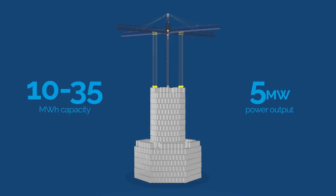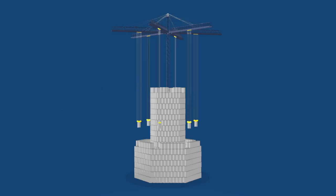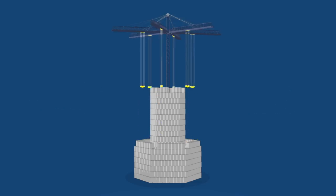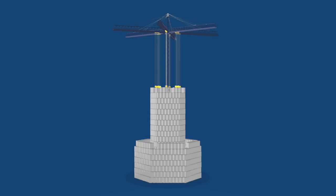When the time comes to discharge, the crane simply returns the bricks to their base state. The kinetic energy from the falling brick turns the motor, previously used to lift a brick, into a generator. This then passes the electricity through an inverter and out to the grid.